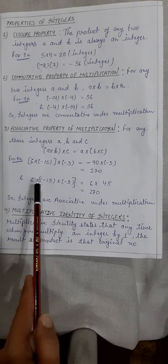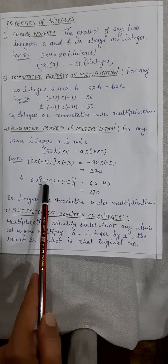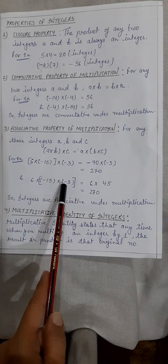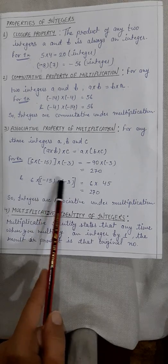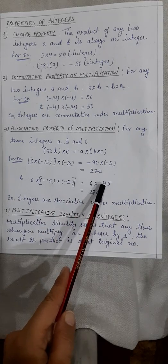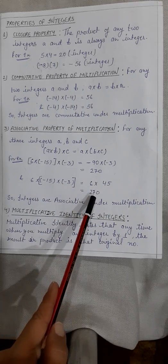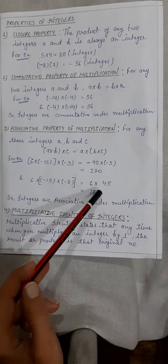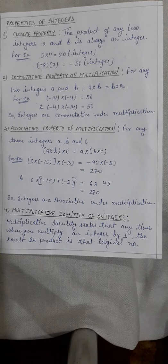Now in the next part, I am grouping minus 15 and minus 3. So first solve minus 15 into minus 3: 15 into 3 is 45, and the sign will be positive because both are negative — same signs. So plus 45, then multiply by 6 to get 270. You can see in both cases the answers are the same, 270. So integers are associative under multiplication.